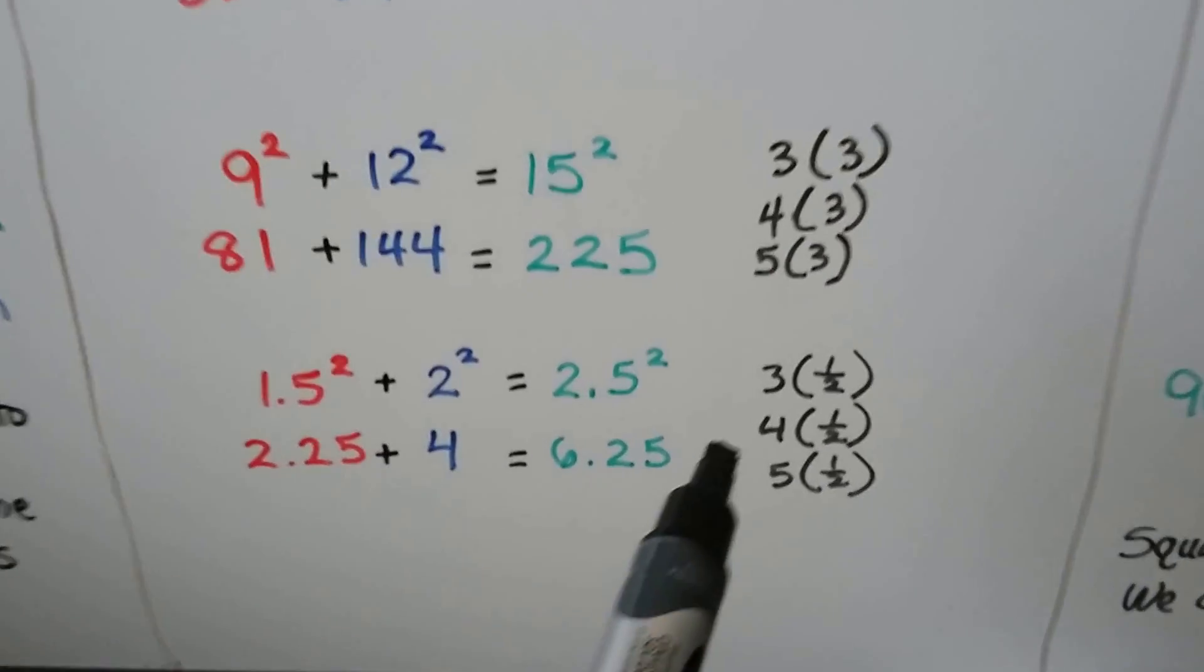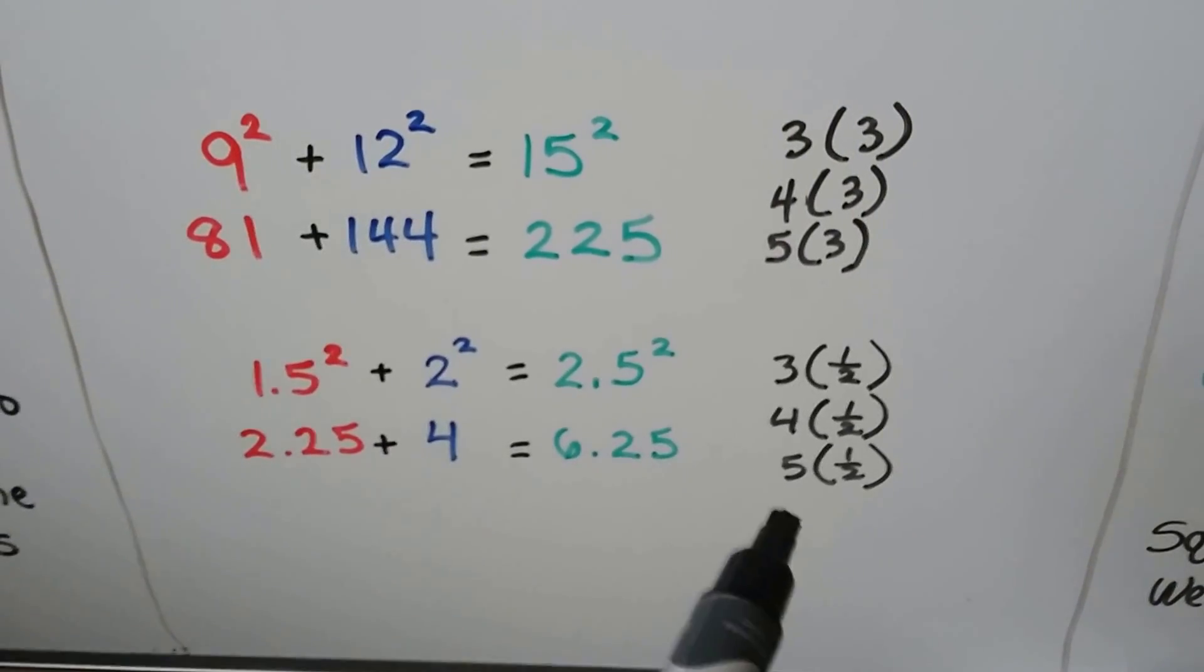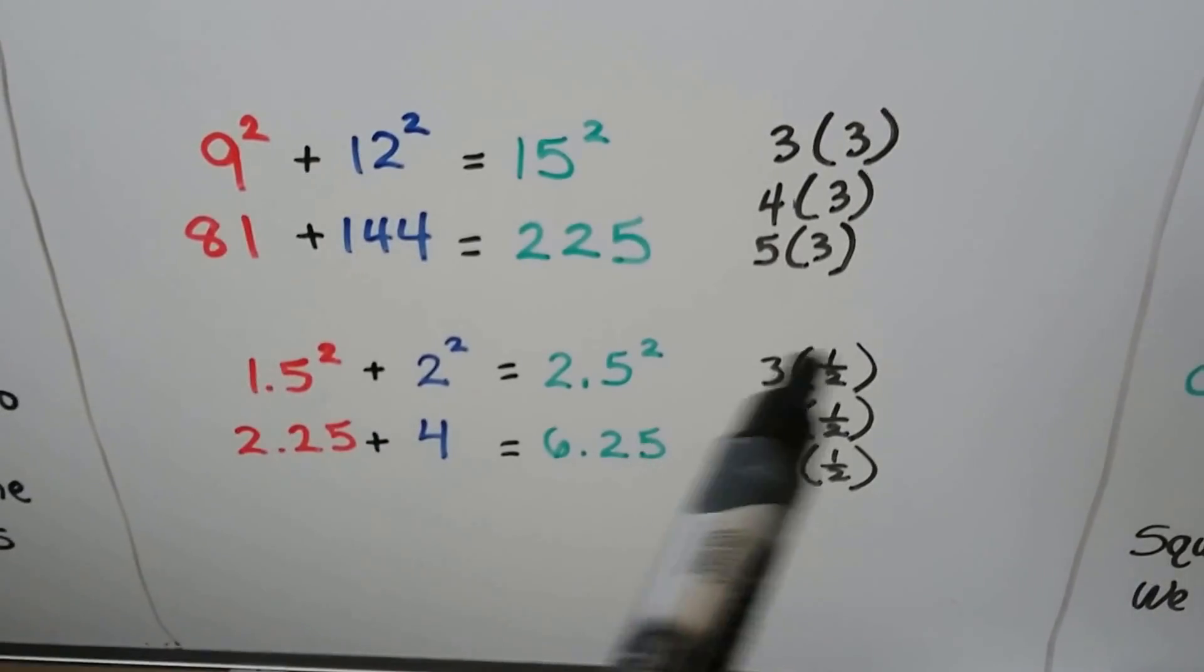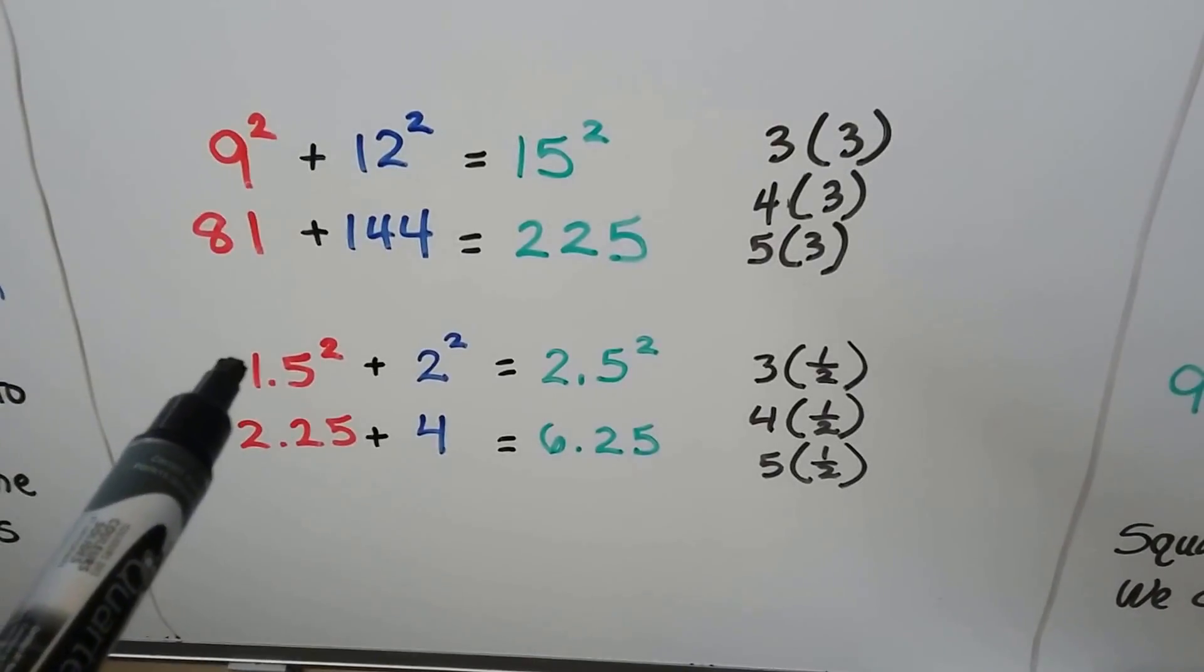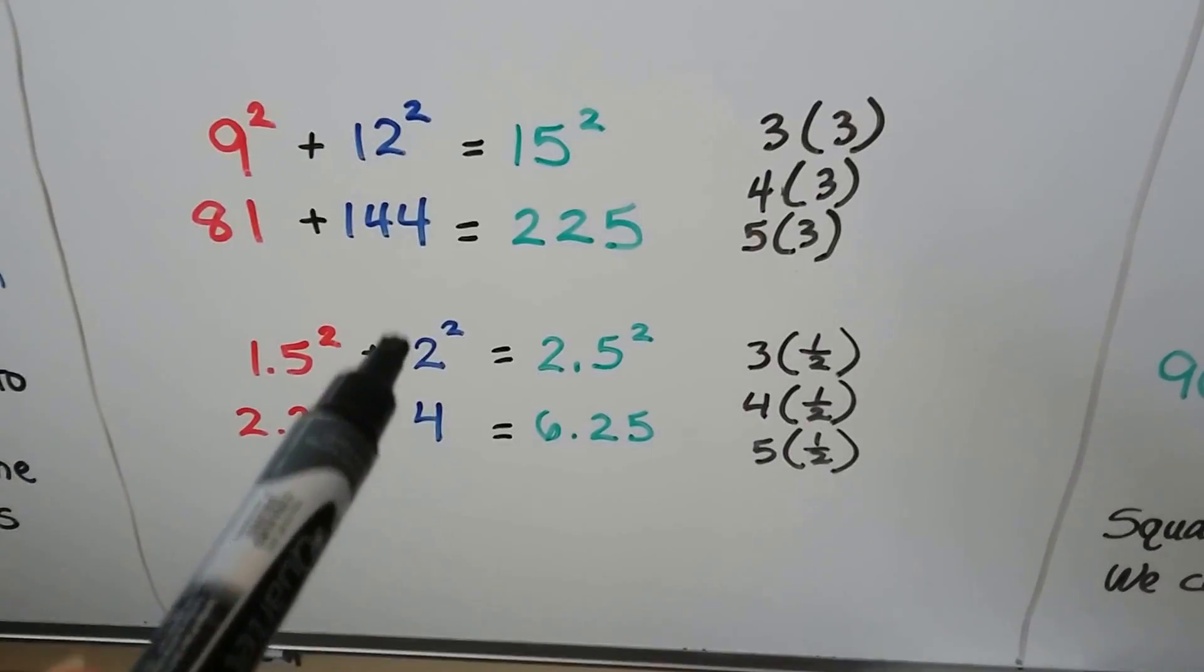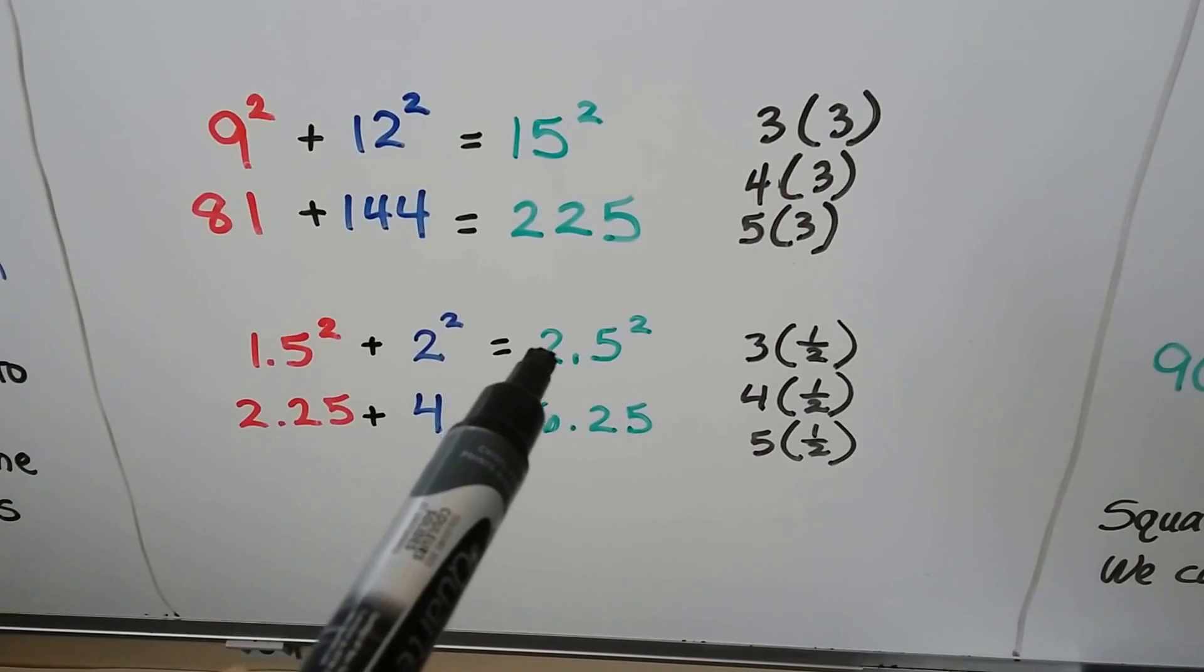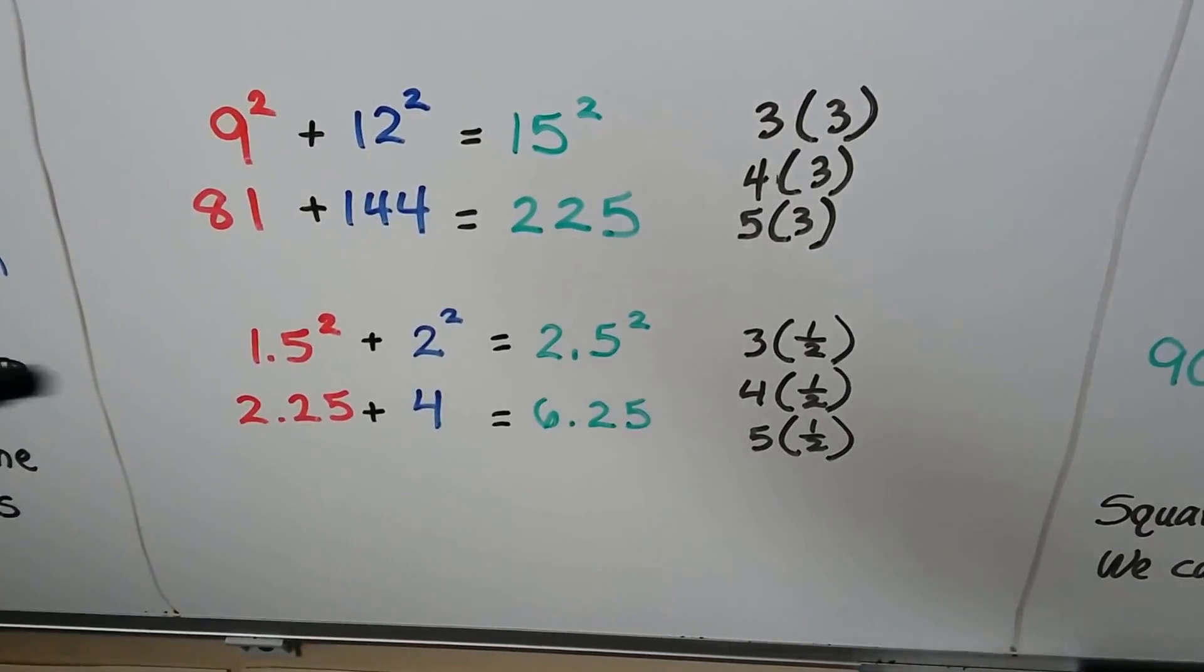We can even do the multiples as 3, 4, and 5 times a half. 3 times a half is 1.5. 4 times a half would be 2, and 5 times a half would be 2.5. It's just cutting them in half.